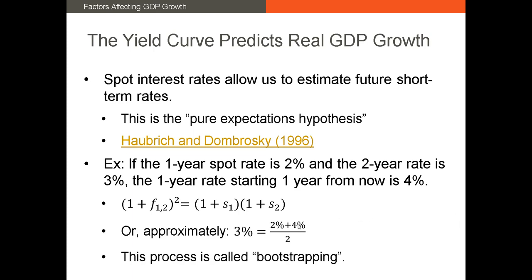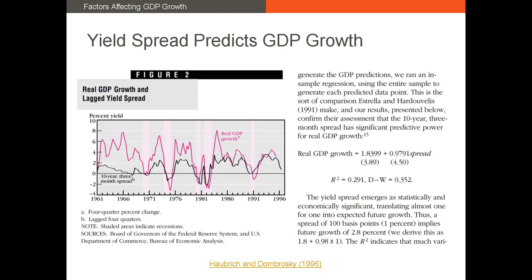The 4% rate is greater than the current 2% rate. What this might indicate is that, even after taking out the maturity risk premium, interest rates in the future are likely going to be higher than today, indicating that maybe the Fed has increased rates to control inflation. To further illustrate Haubrich and Dombrowski's findings, here's a snapshot of their paper, including the regression of real GDP growth on the yield spread between the 10-year and the 3-month Treasuries. They find a positive and significant coefficient on the spread.